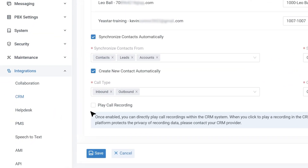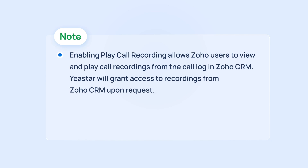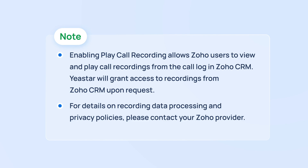For the last step, you can enable Play Call Recording. Once enabled, Zoho users will be able to see and play call recordings from the corresponding call log in Zoho CRM. It will allow access to recordings from Zoho CRM upon request. As for how recording data will be processed in Zoho, as well as the data privacy protection policy, please contact your Zoho provider.